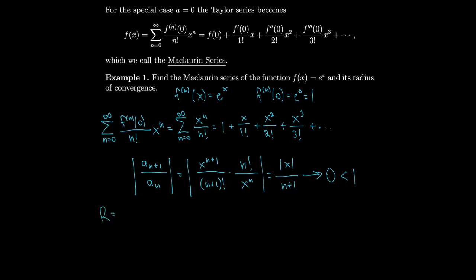Since the series converges for all x, by the test for divergence, the sequence x^n/n! must go to 0 as n approaches infinity — because if it didn't, the series would diverge. So the limit of x^n/n! equals 0 as n goes to infinity. This fact will be very useful shortly.